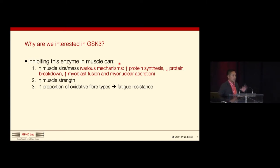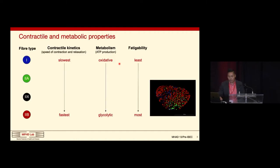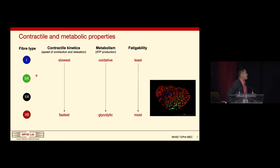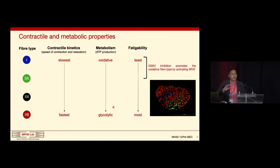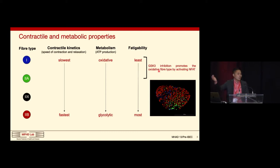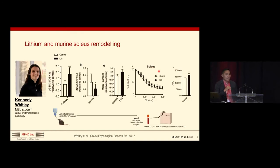The third reason we're interested in inhibiting GSK-3 is that it can increase the proportion of oxidative fiber types, which has implications for fatigue resistance and muscle performance. Our skeletal muscles are made up of a mix of fiber types — type 1 and type 2A are the most oxidative, have more mitochondria, and are least fatigable relative to the glycolytic 2X and 2B fibers. Inhibiting GSK-3 can promote type 1 and 2A fibers by activating the transcription factor NFAT — nuclear factor of activated T cells — which increases transcription of genes associated with the oxidative program. Going back to Kennedy's six-week lithium feeding study in the soleus, we see a significant increase in inhibitory serine phosphorylation.